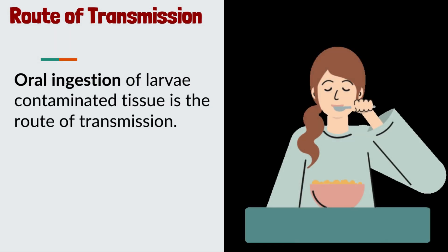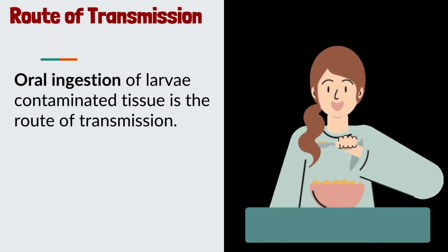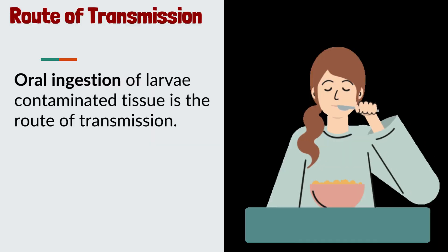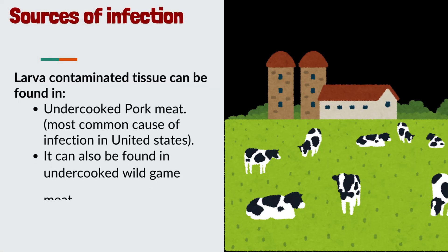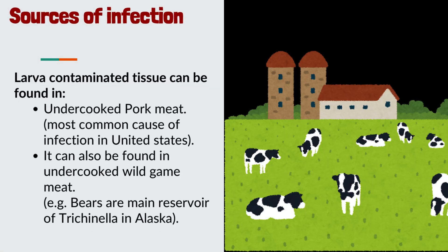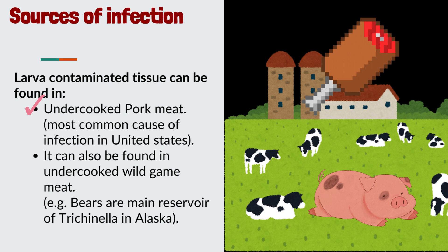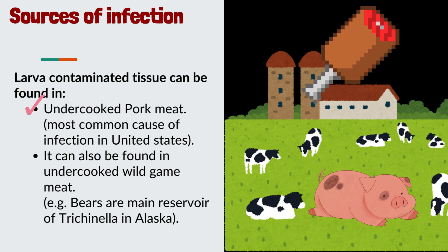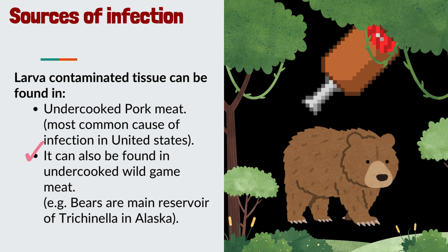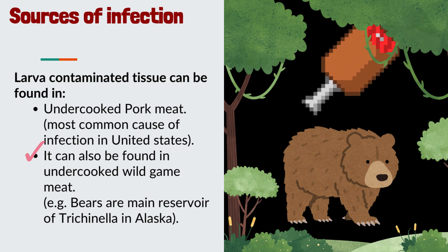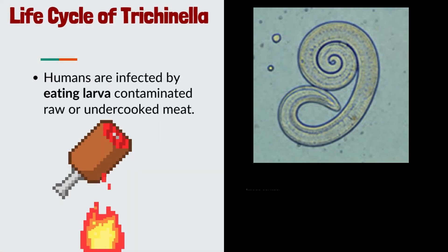Route of transmission of Trichinella: oral ingestion of larvae-contaminated tissue is the route of transmission. Sources of infection include larvae-contaminated tissue found in undercooked pork meat, which is the most common cause of infection in the United States. It can also be found in raw or undercooked wild game meat — for example, bears are the main reservoir of Trichinella in Alaska.